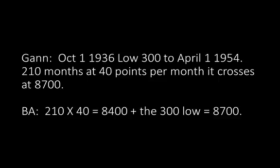Gann, October 1, 1936 low 300 to April 1, 1954, is 210 months at 40 points per month. It crosses at 8,700. BA: 210 times 40 equals 8,400 plus the 300 low equals 8,700. And I know you're shocked, but Gann is actually right on this one, and there's a reason why.